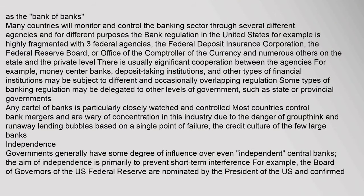Many countries will monitor and control the banking sector through several different agencies and for different purposes. Bank regulation in the United States, for example, is highly fragmented with three federal agencies: the Federal Deposit Insurance Corporation, the Federal Reserve Board, and the Office of the Comptroller of the Currency, among numerous others at the state level. Some types of banking regulation may be delegated to other levels of government, such as state or provincial governments. Most countries control bank mergers and are wary of concentration in this industry due to the danger of groupthink and runaway lending bubbles based on a single point of failure.